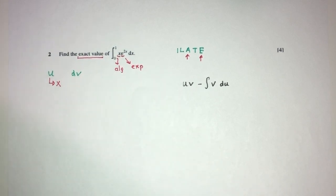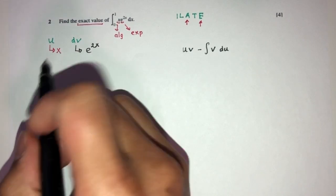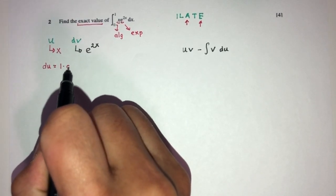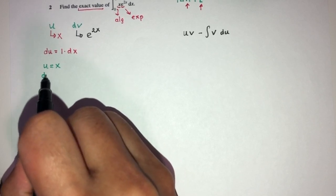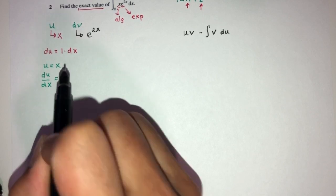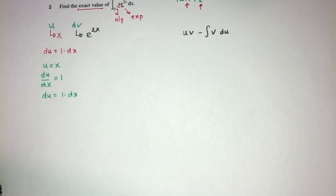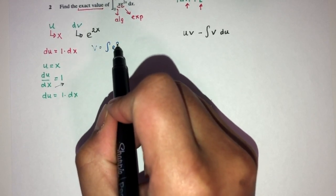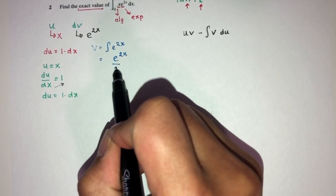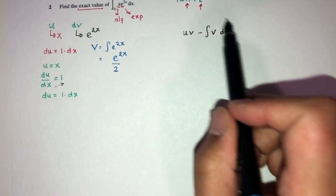With u = x, differentiating gives du = 1·dx, so du = dx. For dv = e^(2x) dx, integrating gives v = e^(2x)/2. Now that we have u, v, and du, we can substitute back into the integration by parts formula.